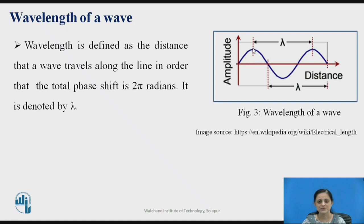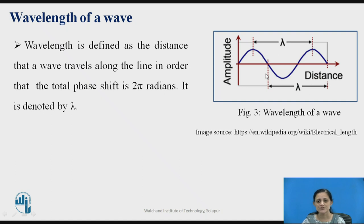If you observe this wave, you can see the maximum amplitude at the positive side and the maximum amplitude at the negative side, generally denoted as plus Vm and minus Vm. The distance covered from the first maximum value at the positive side to the second maximum value — this distance covered by the wave is denoted with lambda. Lambda is the wavelength, representing the distance along the line for which the wave travels for a total phase shift equal to 2 pi radians.